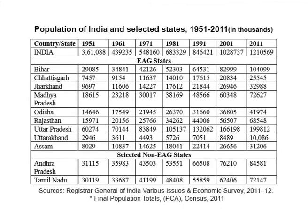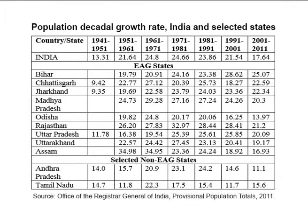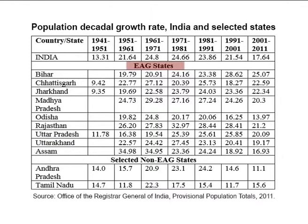It has consistently increased from 43.4% in 1991 to 44.7% in 2001. Table 2 on your screen shows that in the decade 2001 to 2011, all of the EAG states except Odisha at 13.9% have registered a higher growth rate than India's overall growth rate. Uttarakhand is the second best among the EAG states with a population growth rate of 19.2%.